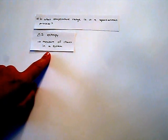The next question is in what temperature range it is a spontaneous process. To answer this we have to look at another size, the entropy, which is a measure of chaos in a system.